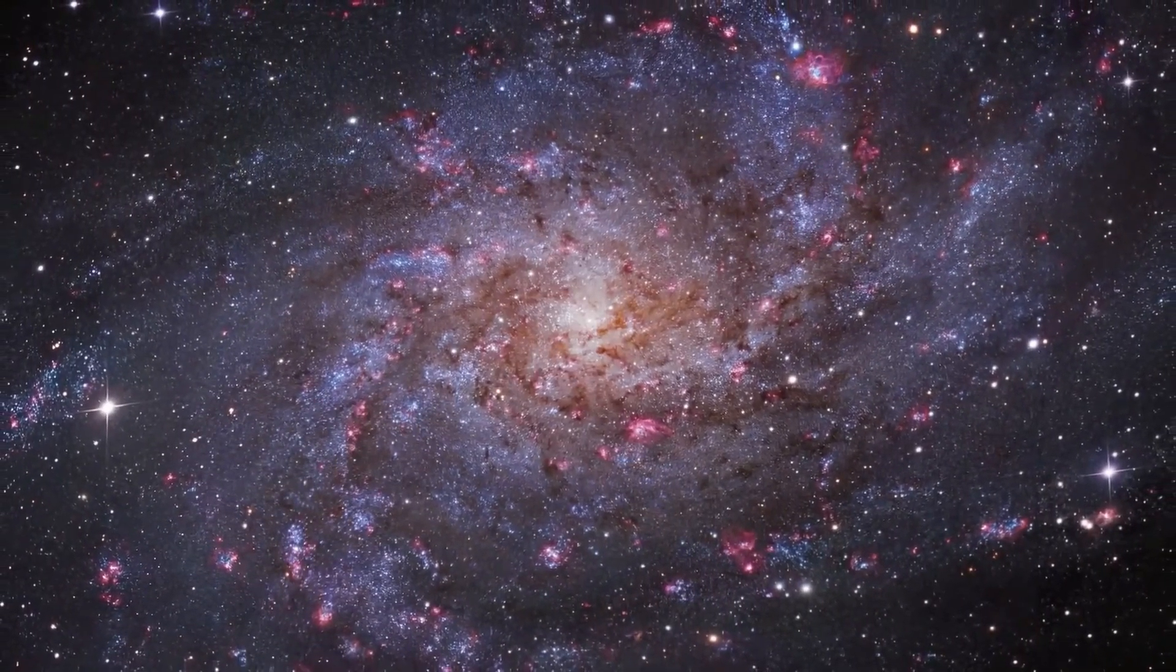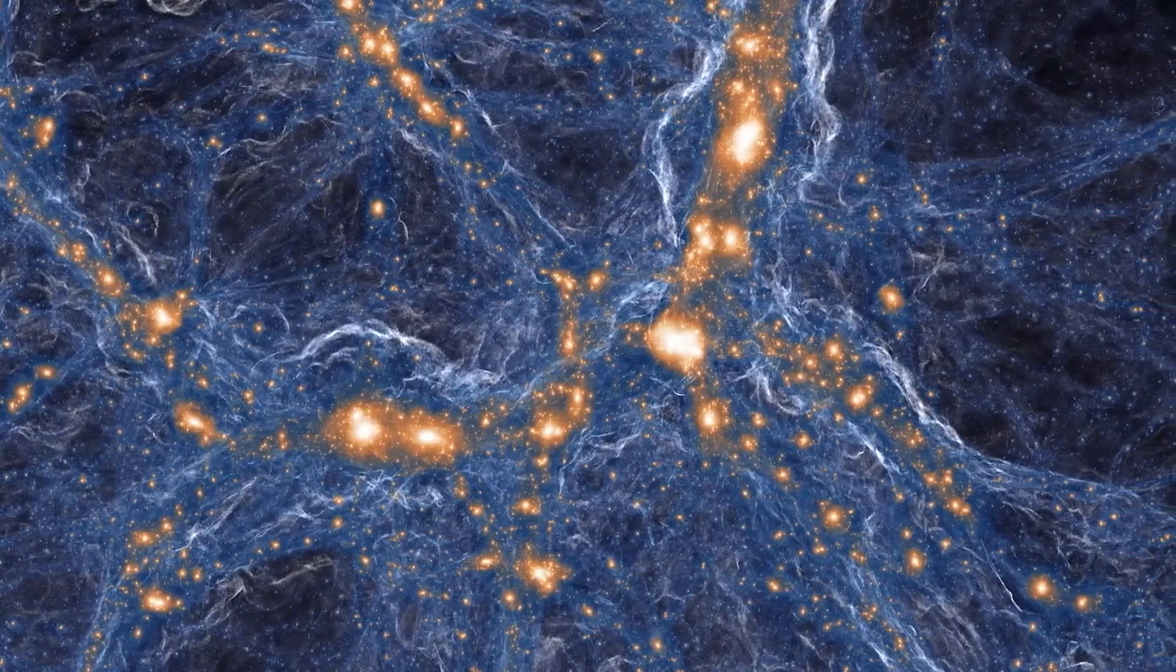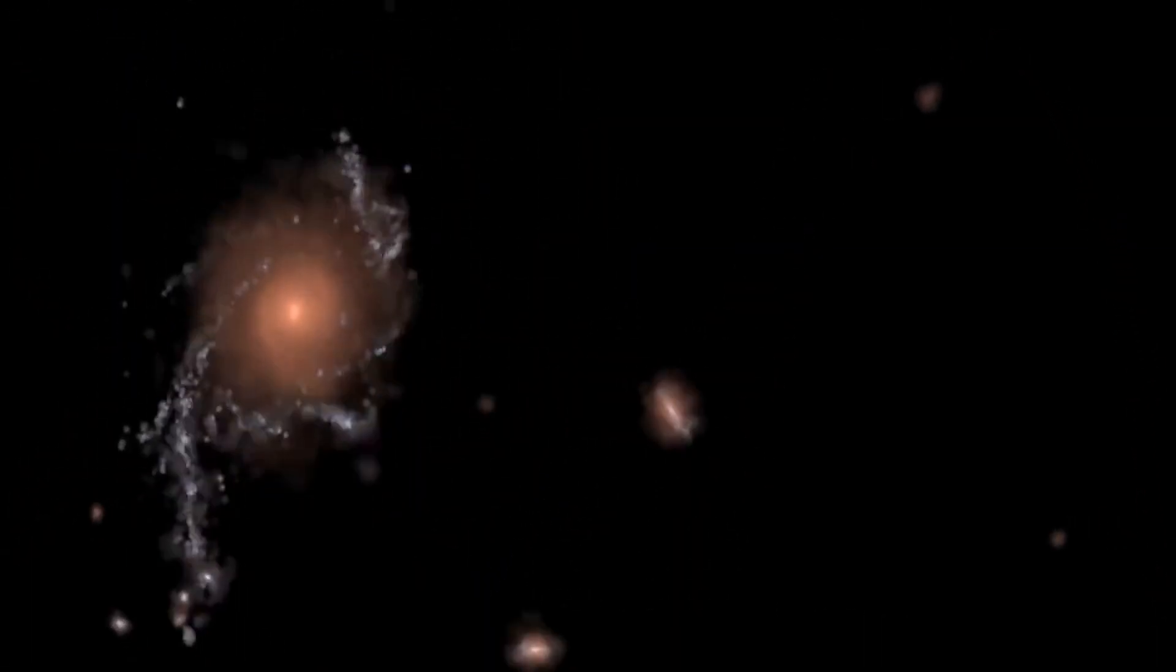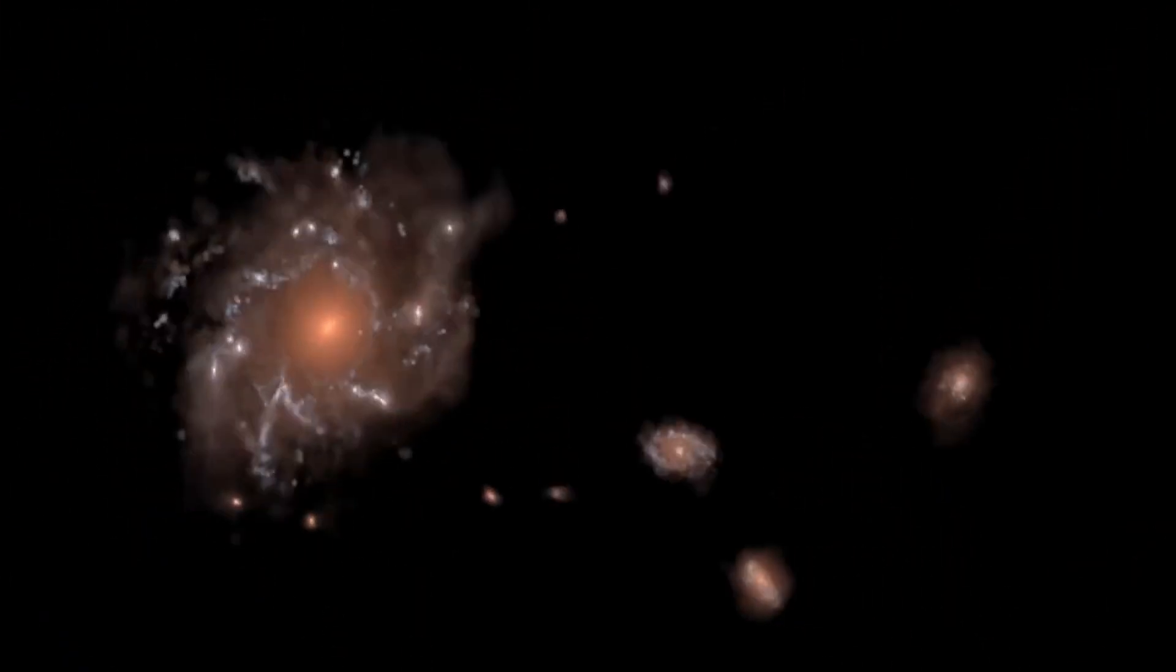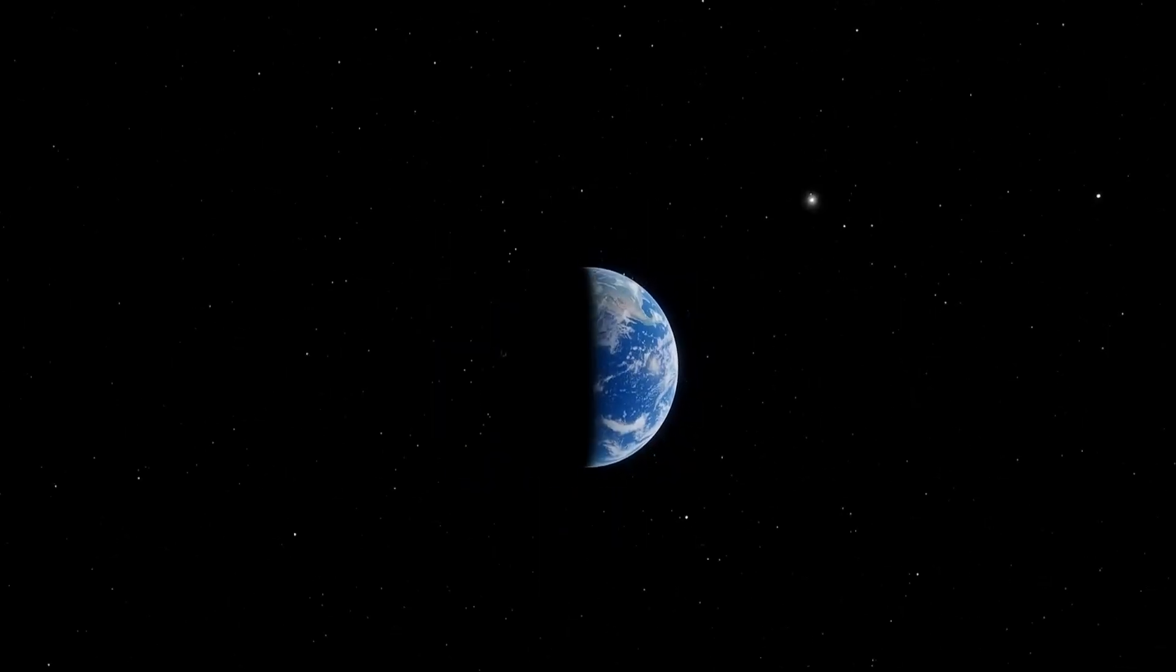Over time, additional evidence supporting the existence of dark matter accumulated. In the 1980s, the observation of gravitational lensing by galaxy clusters provided further support. Then, in the 1990s, measurements of the cosmic microwave background and the large-scale structure formation of the universe indicated the likely existence of dark matter. These observations indicated that the universe displays more clumps and filaments than expected if composed only of visible matter.